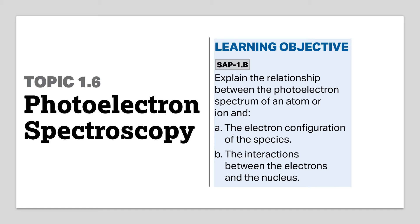The learning objective of this topic is to explain the relationship between the photoelectron spectrum of an atom or ion and the electron configuration of the species, as well as the interactions between the electrons and the nucleus. In this video, I'll be talking about photoelectron spectroscopy, its spectrum, and explaining these relationships.